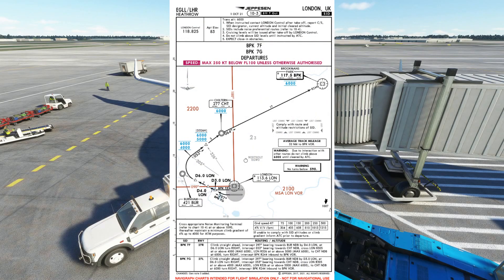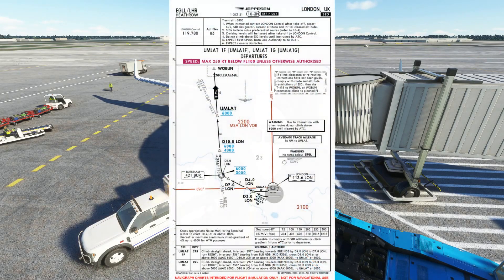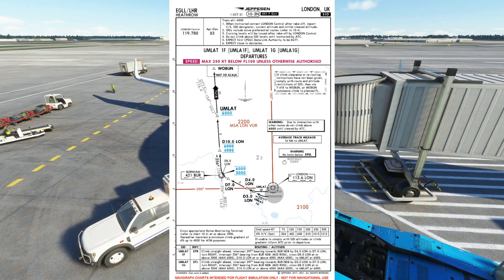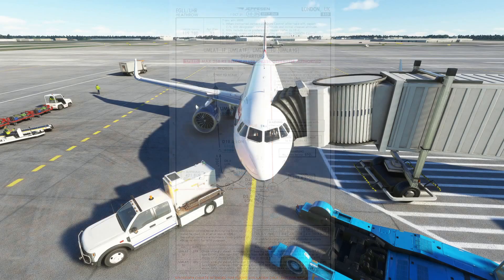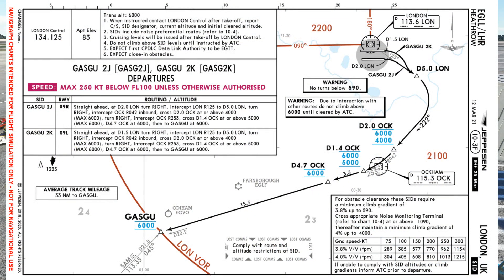So what is the standard instrument departure and why do we have them? Standard instrument departures, also known as SIDs, are published flight procedures that are followed by aircraft on an IFR flight plan immediately after departure. SIDs allow aircraft to depart an airspace following a predefined route, sometimes with altitude and speed restrictions, that helps them navigate adjacent airspaces, terrain, and arriving traffic.